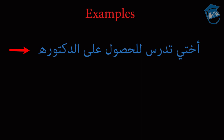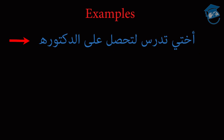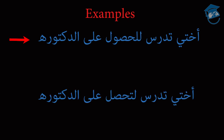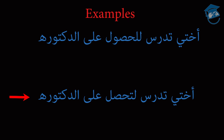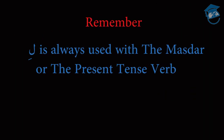Let's look at the third set of examples. In the first example you're using the mazdar, and in the second example you're using the present tense verb to give the same meaning. Remember that li is always used with the mazdar or the present tense verb.